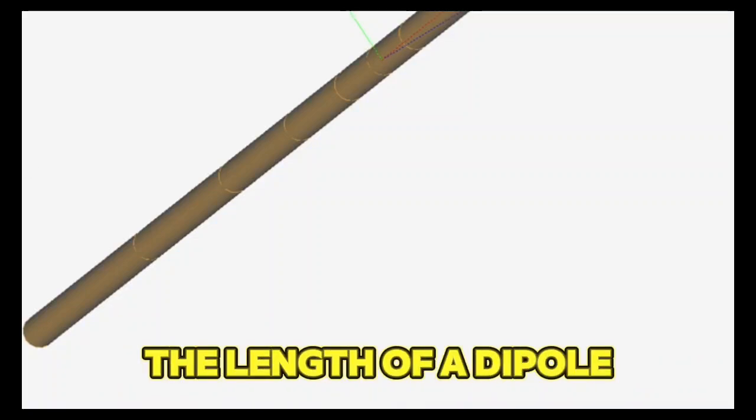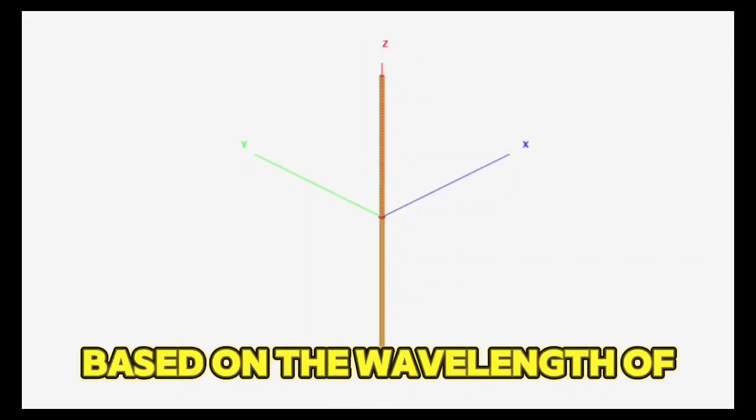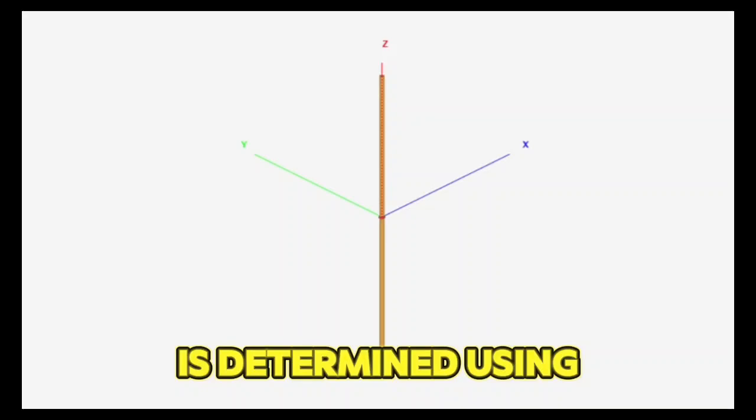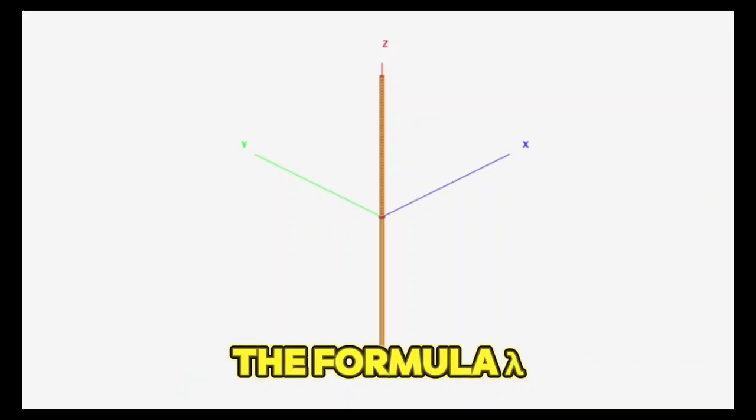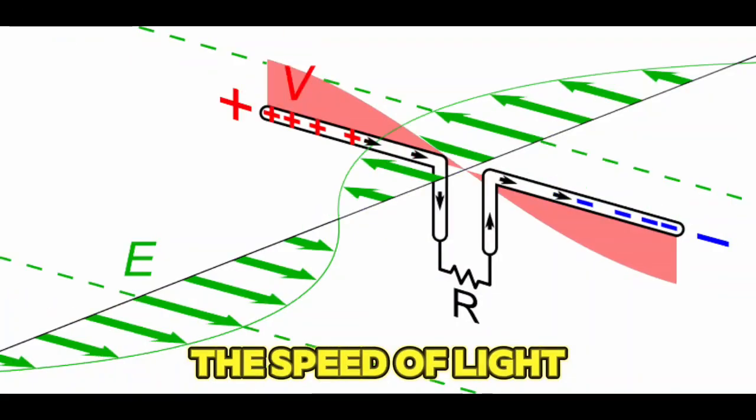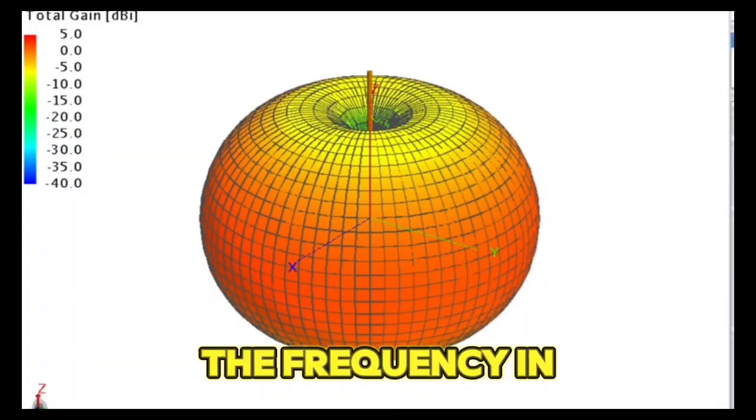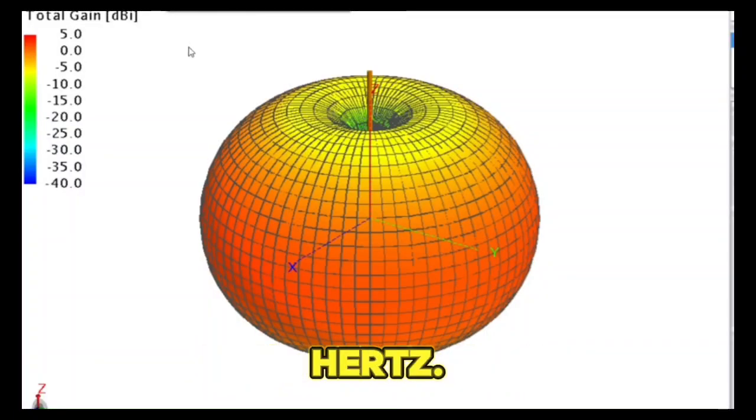The length of a dipole antenna is calculated based on the wavelength of the operating frequency. The wavelength lambda is determined using the formula lambda equals c/f, where c is the speed of light approximately 3×10^8 meters per second and f is the frequency in hertz.